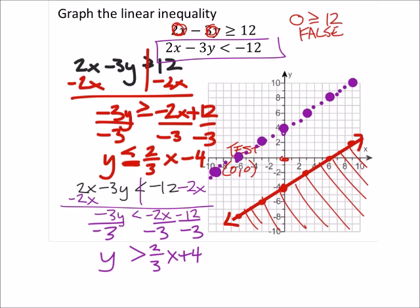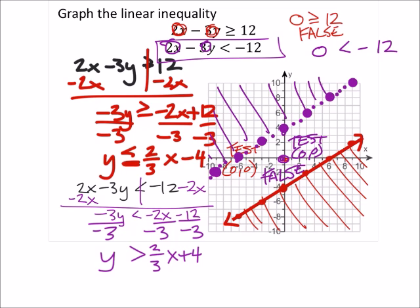And again, I need to test the point for this line. So I'm going to test for the purple line, 0, 0. And that gives me 0 minus 0. So I got 0 is less than negative 12. This one is false. And so I would shade the other side of that line, like this.